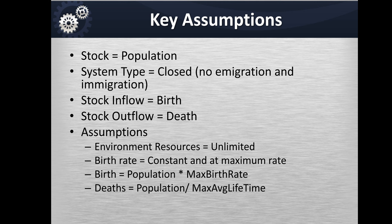In the first iteration of this model we will assume certain assumptions. The first assumption is that the environmental resources available in this system are unlimited. Therefore the birth rate is the average number of new individuals produced by an individual per year. The formula for birth is: birth equals population times the maximum birth rate. The formula for death will be: population divided by maximum average lifetime.